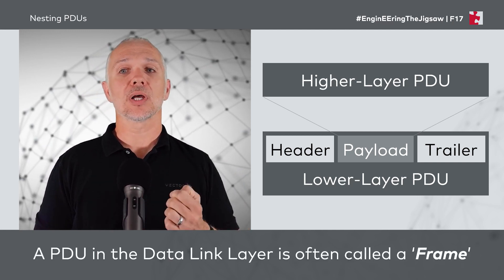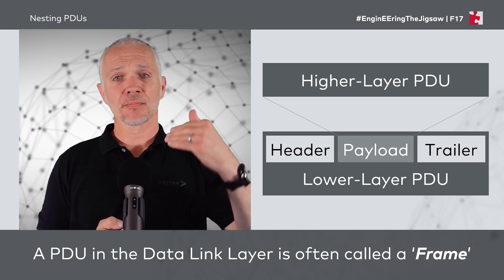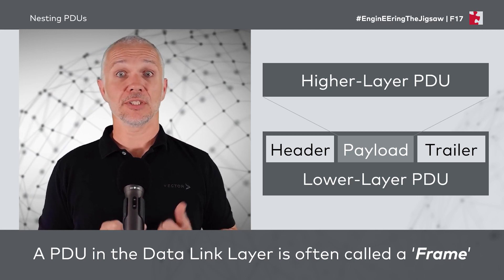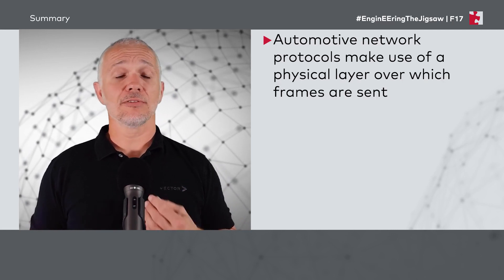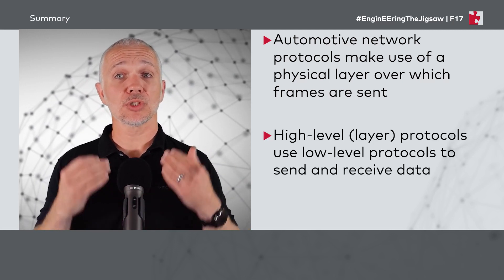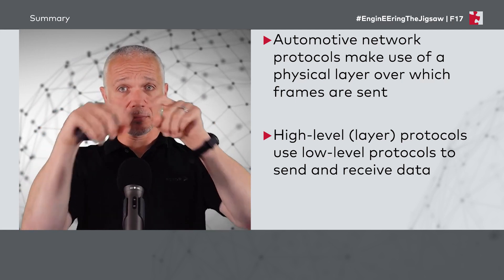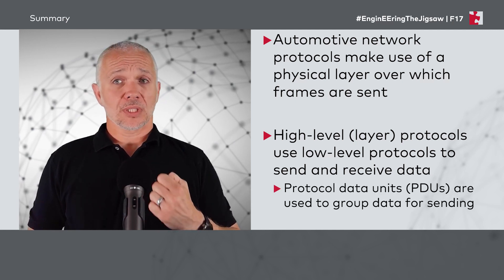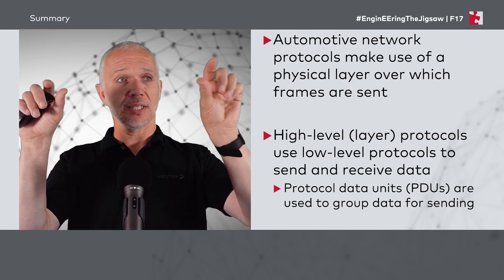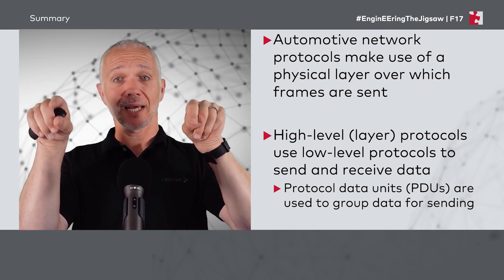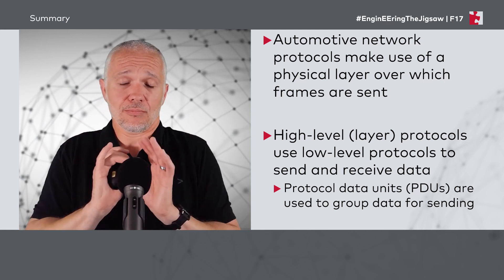We often talk about frames — PDUs in the data link layer are commonly called frames. People talk about CAN frames and Ethernet frames, which exist in the data link layer and are sent using physics over the physical layer. As a summary: automotive network protocols use a physical layer over which frames are sent; higher layer protocols use lower level protocols to send and receive data in a nested, Russian-doll fashion — packed up on one side to send and unpacked on the other side to receive; and protocol data units group data at each layer for sending, enabling logical transfer between corresponding layers on sender and receiver.